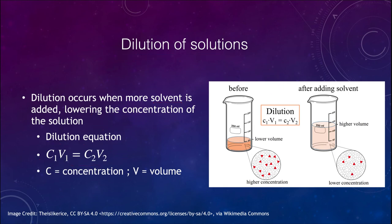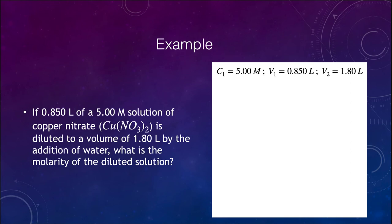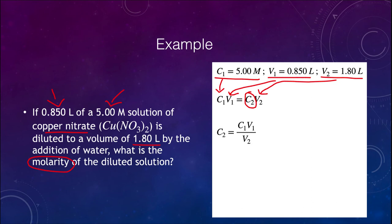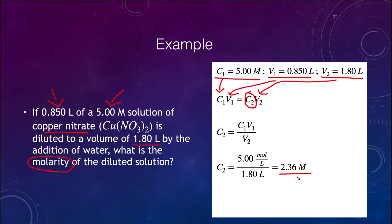Our example: we have a 0.85 liter solution of a 0.5 molar solution of copper nitrate, diluted to 1.8 liters by adding water, and we want to find the new molarity. We know C1 = 0.5 molar, V1 = 0.85 liters, and V2 = 1.8 liters. Using C1V1 = C2V2, we solve for C2 = C1V1 divided by V2. Putting in the numbers, C2 equals 0.236 molar — the molarity decreased as expected when adding solvent.